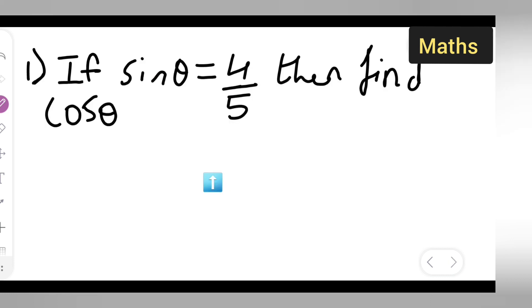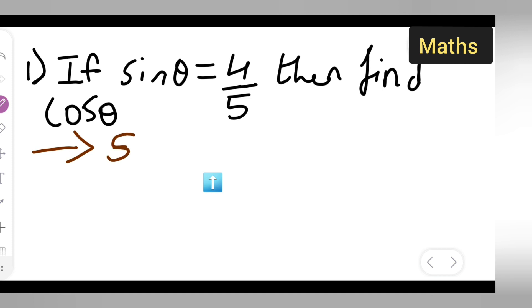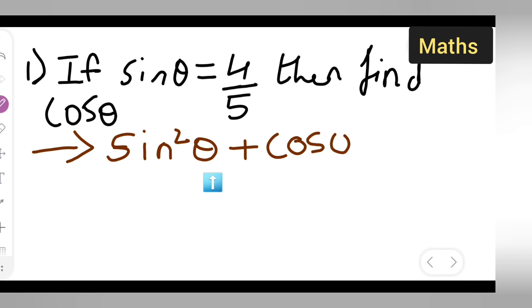We are given sine theta and we need to find cos theta. To do this, you need to know the identity: sine square theta plus cos square theta is equal to 1.